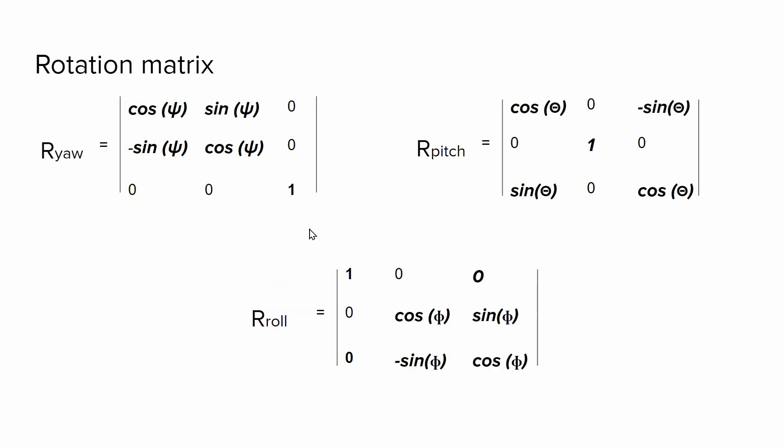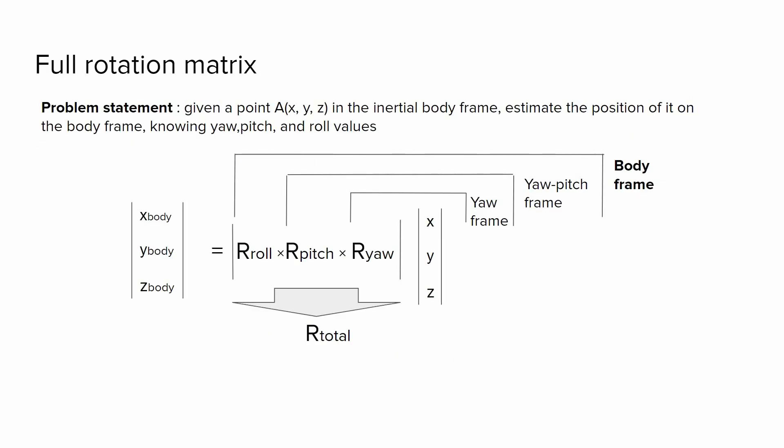We can define similar rotation matrices for pitch and roll angles as well. And the interesting thing of using these rotation matrices is that we can multiply them to define several successive rotations. In our example, we do yaw rotation, then pitch rotation, then roll rotation at the end. And when multiplying these matrices, we have to keep that order. It's super important.